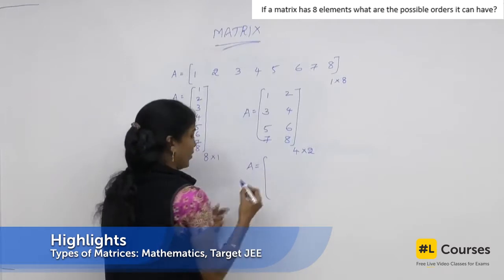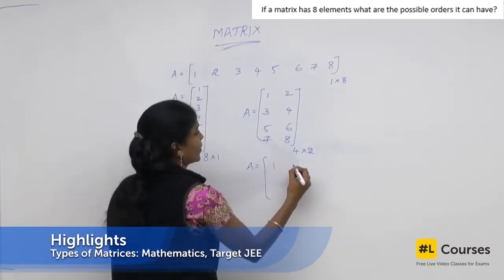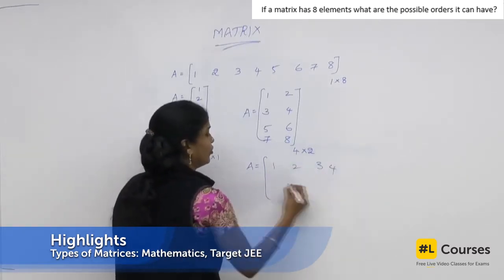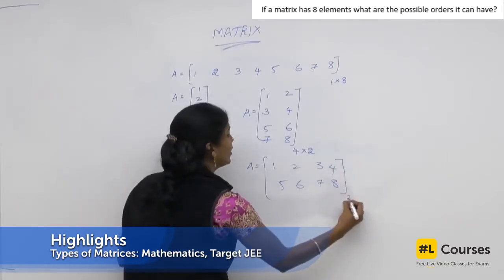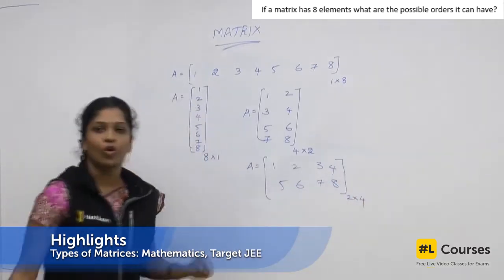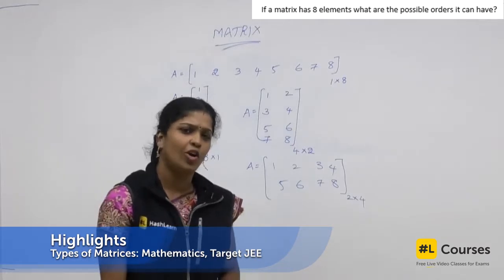Some other people would have written like this. 1, 2, 3, 4, 5, 6, 7, 8. How many rows are there? 2 rows are there. 4 columns are there. Is there any other possibility?